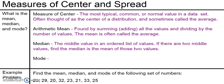The second way to find the center is called the median. The median is the middle value in an ordered list of values. You may remember taking a list of numbers, maybe from a survey, putting them all in order, and counting until you found that middle value. The middle one is called the median. If there are two middle values, the median is the mean, or the average, of those two middle values.